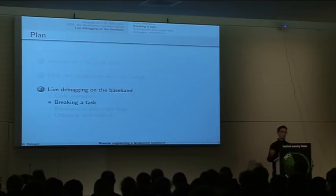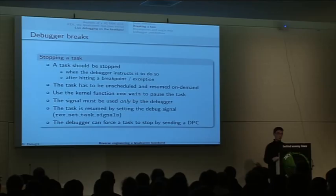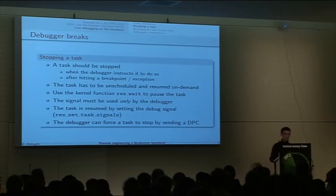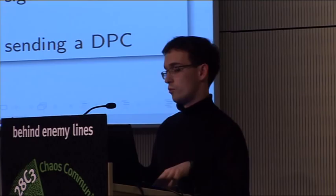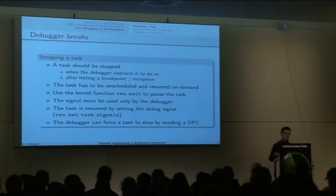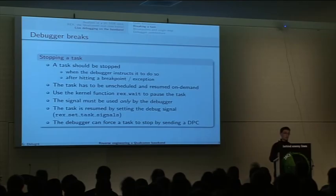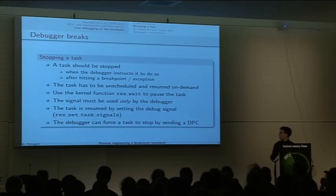When you get code execution and want to write a debugger, you next want to be able to break a task. A task should be stopped if instructed to do so, when the debugger tells it to stop, or if you hit an exception or a breakpoint. You have to be able to unschedule a task and resume it on-demand. For this, I just reused the kernel API I reversed before. There is a specific function for waiting for a signal for a task. I'm just telling a task to wait for this signal, and the debugger can resume the task by sending the signal to the task.